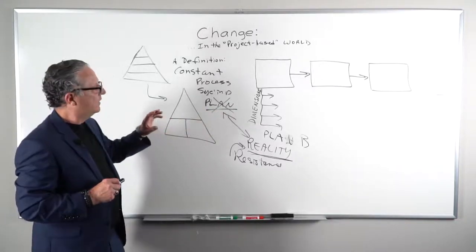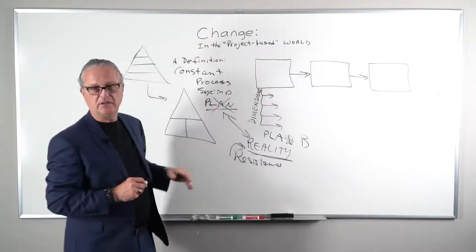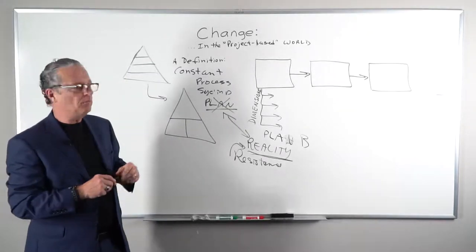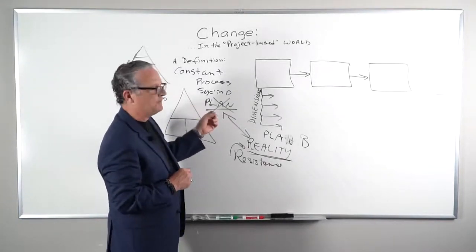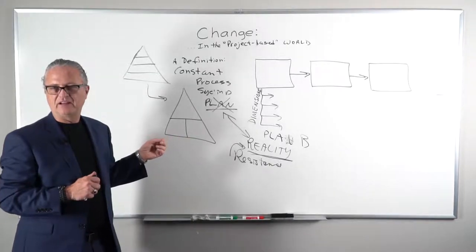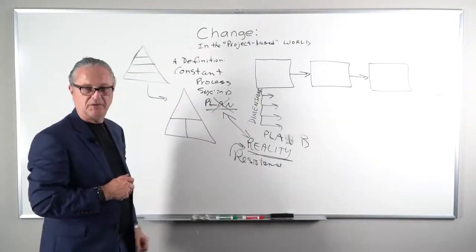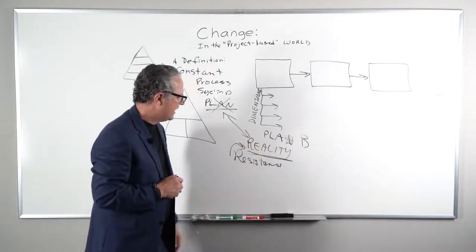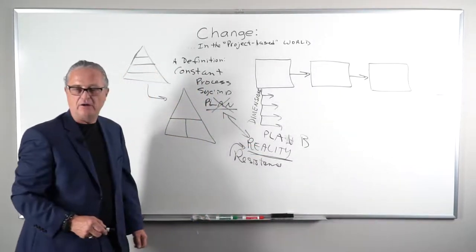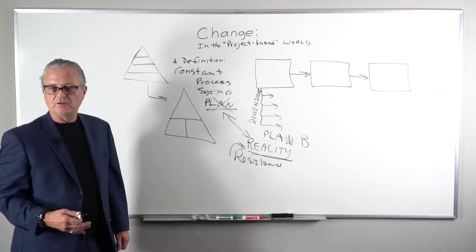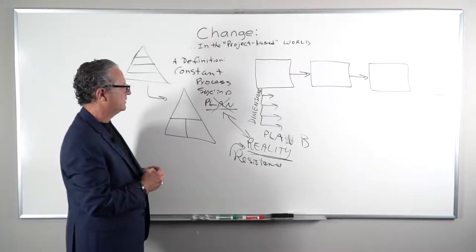So some people think project management is rigid, and I would say that's the opposite of the definition of project management. The definition of project management is the constant changing of the plan to re-sync against reality and deal with the resistance of that reality and how we're going to do the change. What are we going to change?